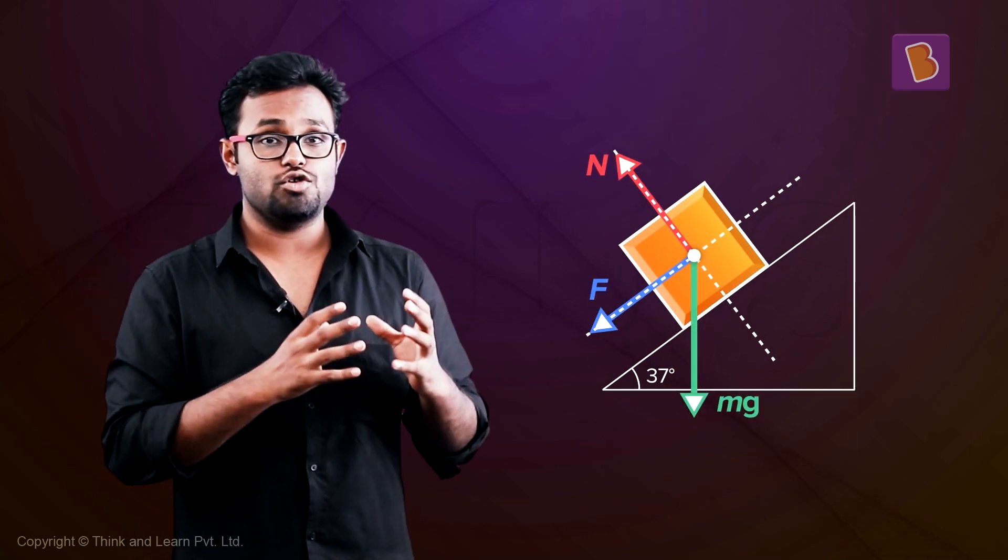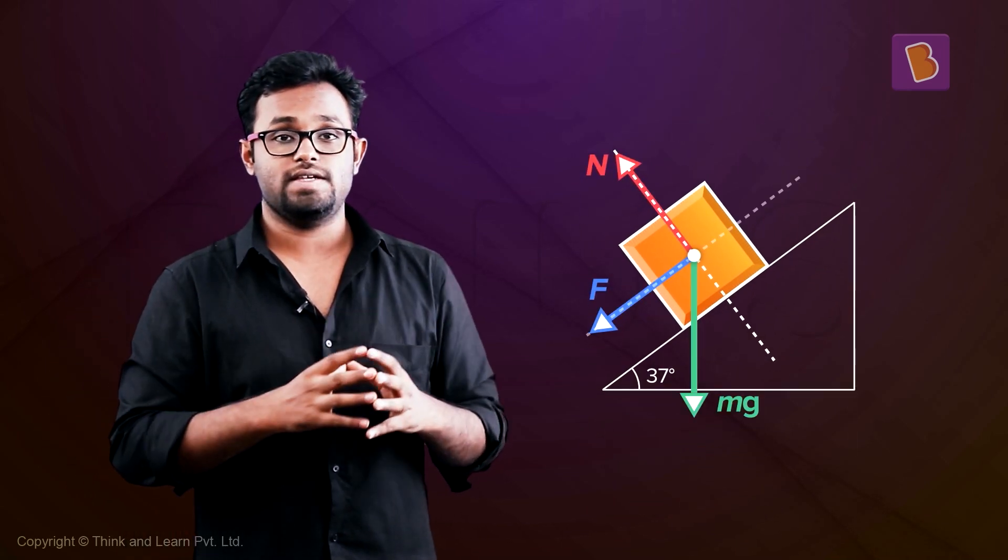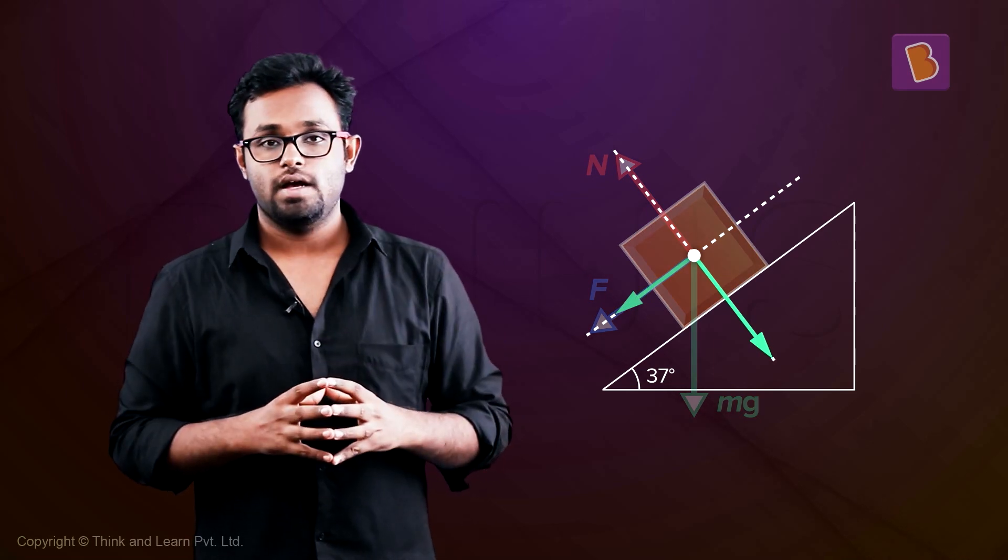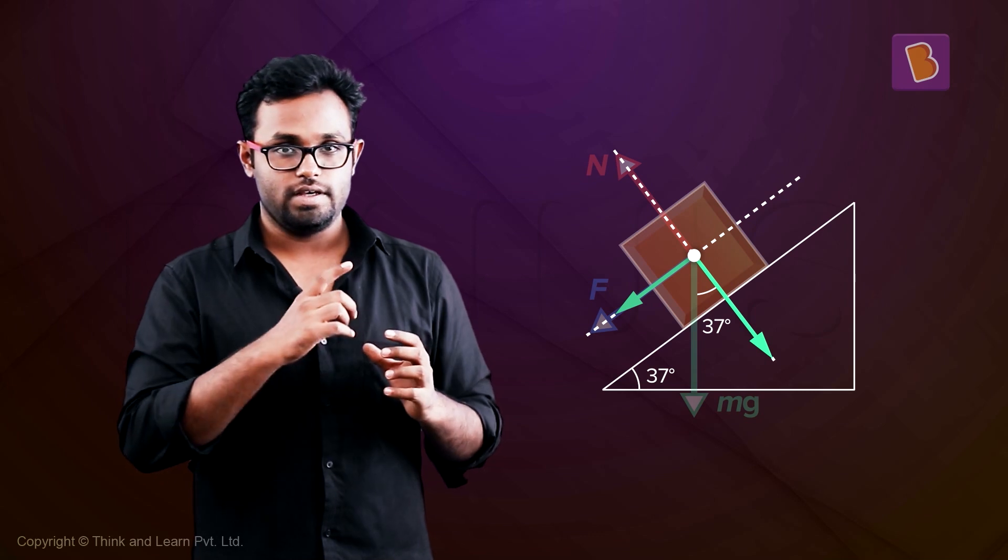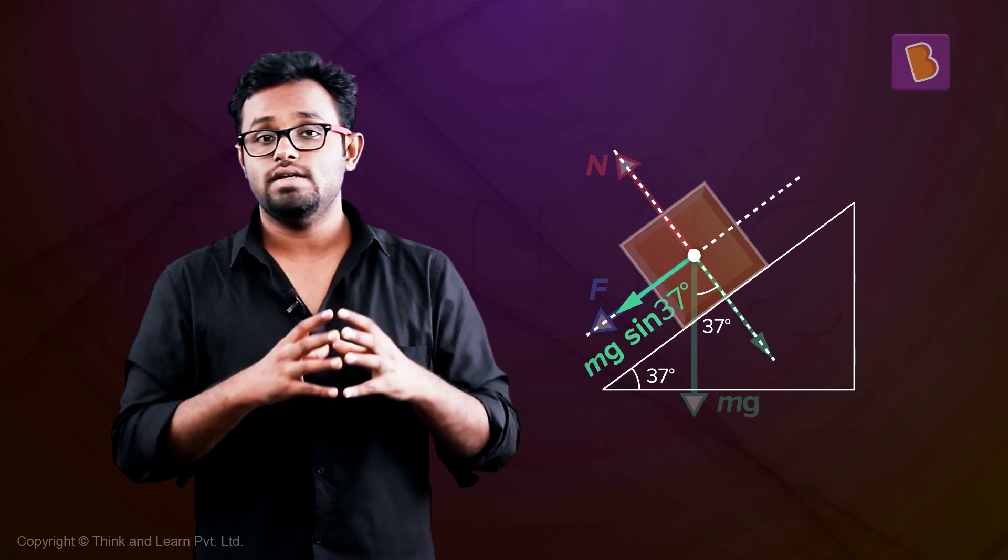Now, in this case, if I resolve MG along the x-axis, the axis which we are calling x, then if that angle is 37 degrees, then this will become, yes, that will be MG sin 37 degrees.